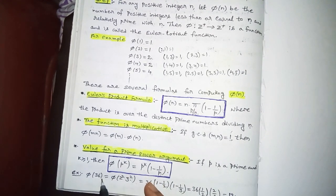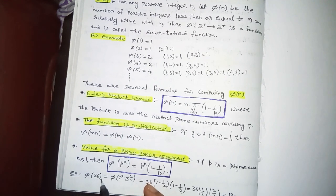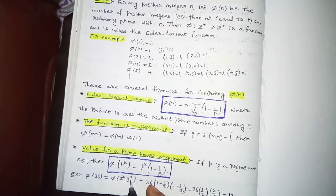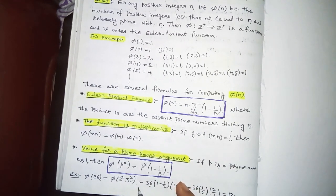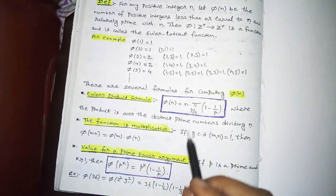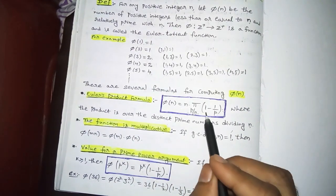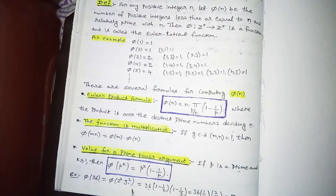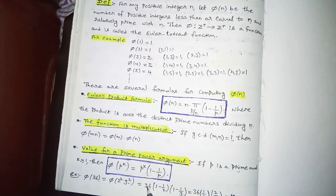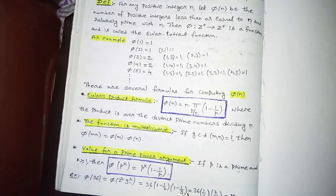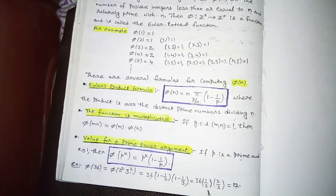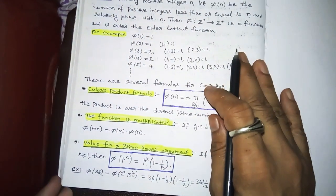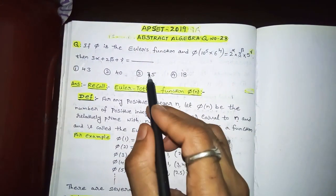Let's see one example. If n = 36, we compute φ(36). Since 36 = 2² × 3², by the product formula: φ(36) = 36 × (1 − 1/2) × (1 − 1/3) = 36 × (1/2) × (2/3) = 12.